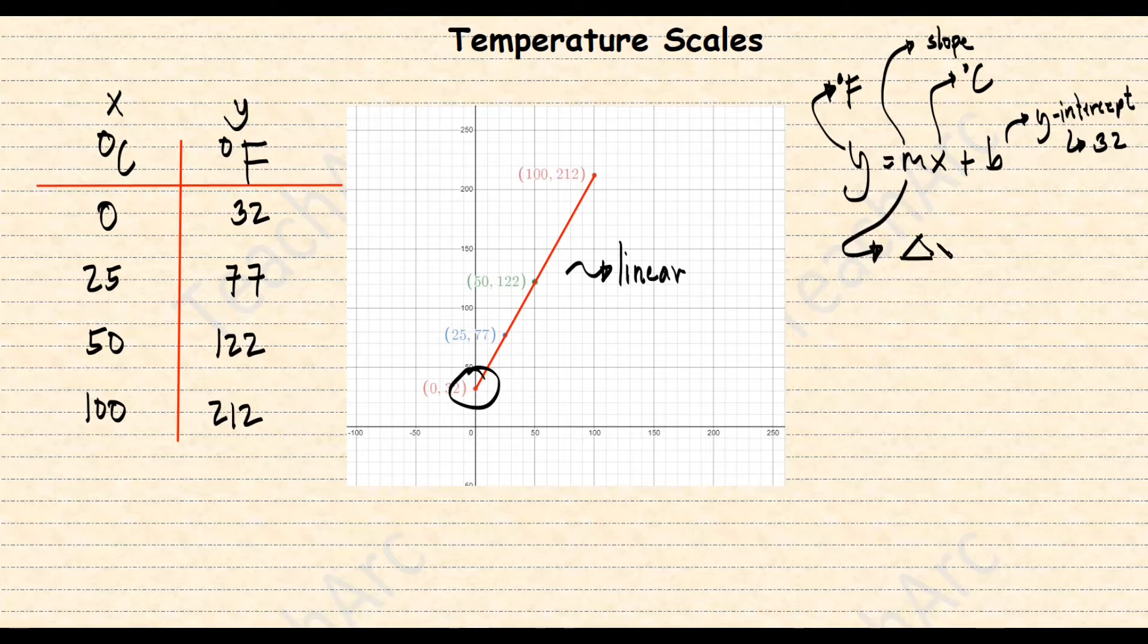Of course, we know that slope is rise over run. Again, I'll be choosing two points. I want these points at the middle because most people will use the freezing point and the boiling point which are overly used already. So, rise is 122 minus 77 over run which is 50 minus 25. So, our slope is 9 over 5.